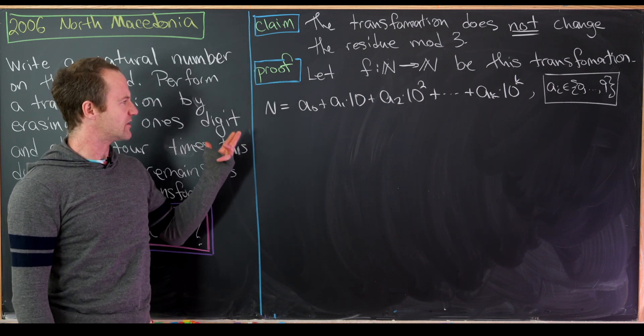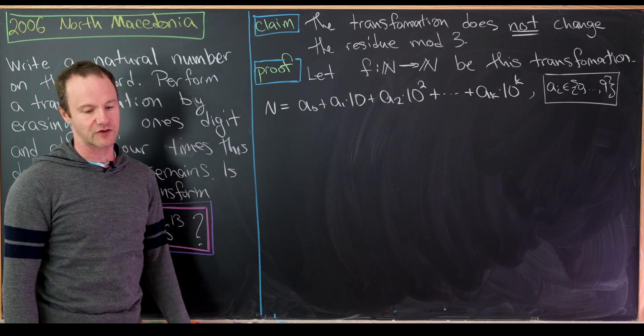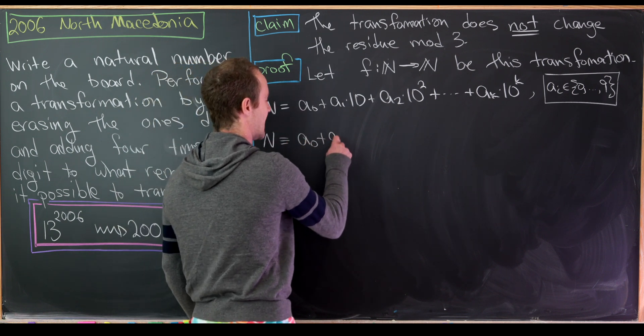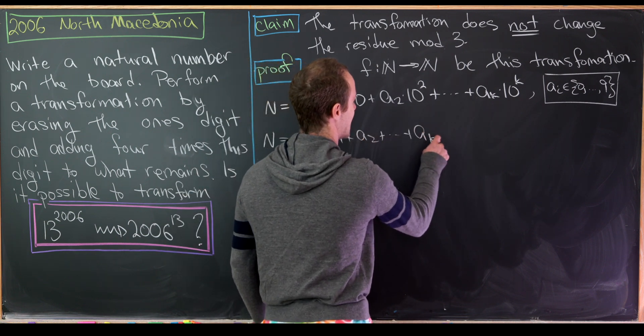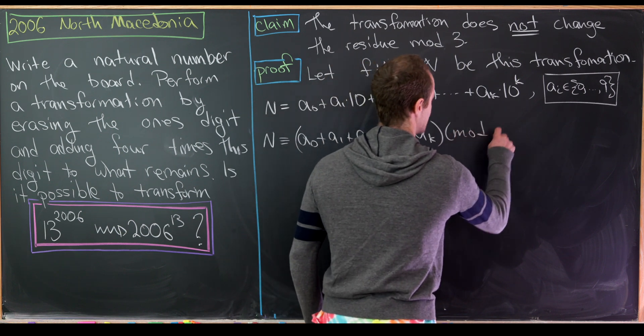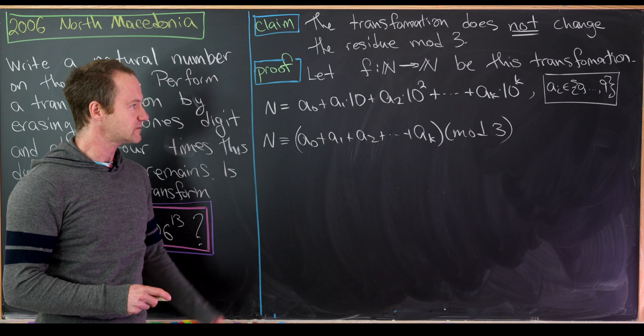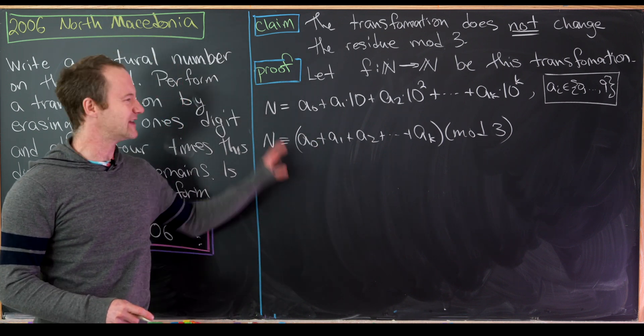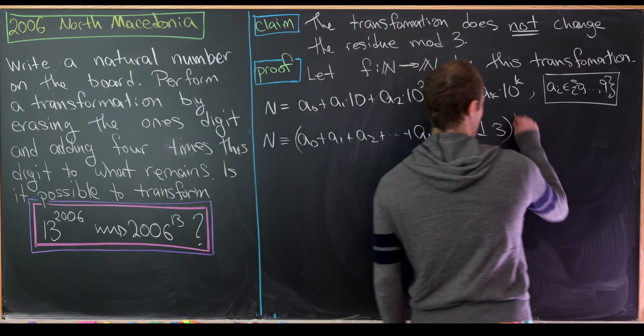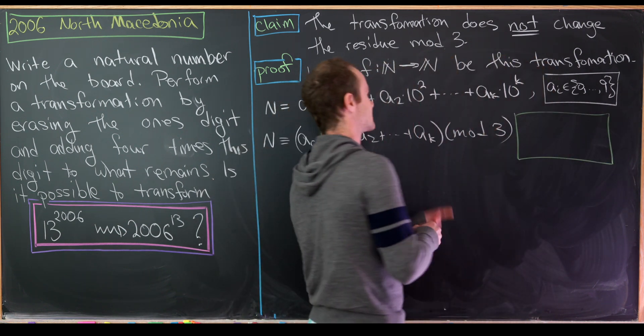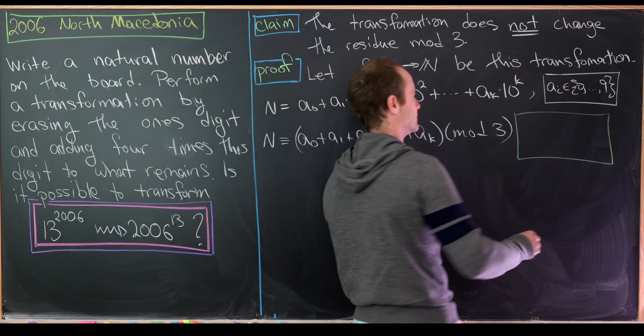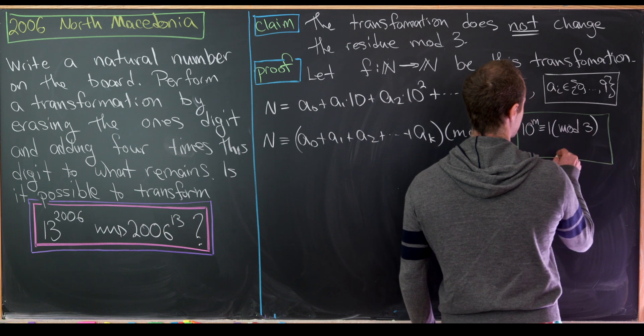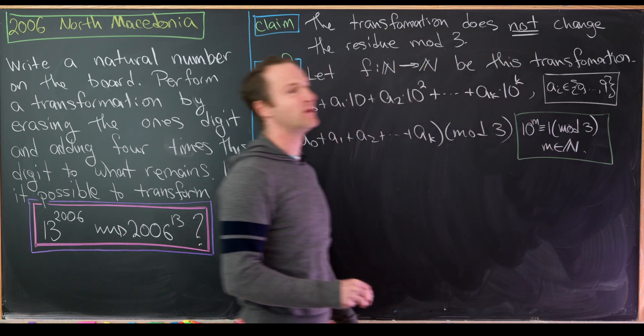Now let's calculate the residue of n mod 3 and we'll also calculate the residue of f(n) mod 3. So n is congruent to a₀ + a₁ + a₂ + ... + aₖ mod 3. That's using the standard fact that the residue mod 3 of a number is equivalent to its digit sum mod 3 and that's exactly what we have here. That all boils down to the fact that 10 is congruent to 1 mod 3 and thus 10 to any power is congruent to 1 mod 3. So 10^m is congruent to 1 mod 3 for all natural numbers m, maybe also including 0.